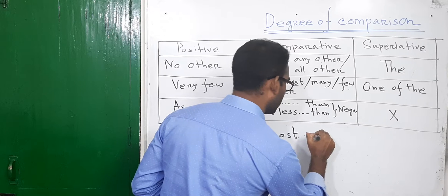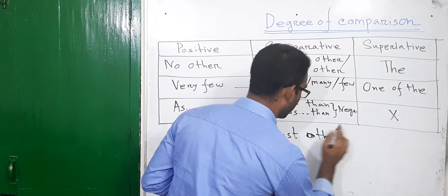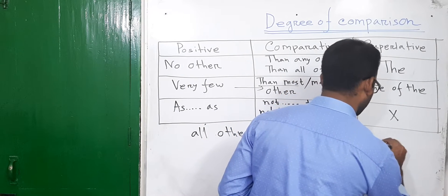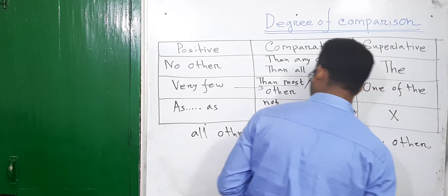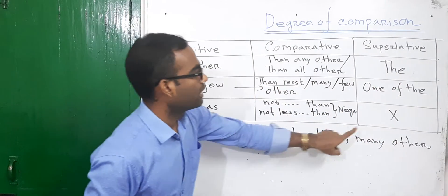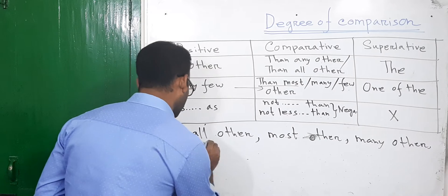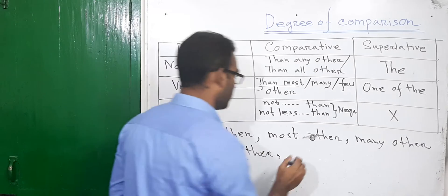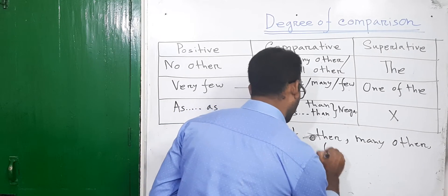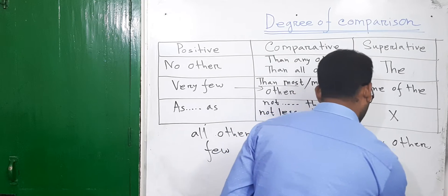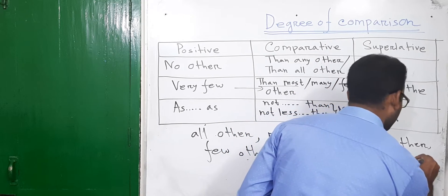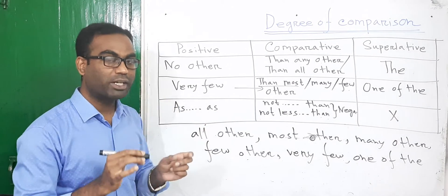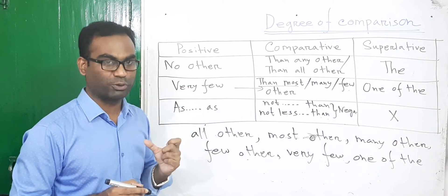Most other. Most other, many other, all other, most other, many other. Few other — very few. One of the, and here we will have an example which is rules and law. This is a common example.